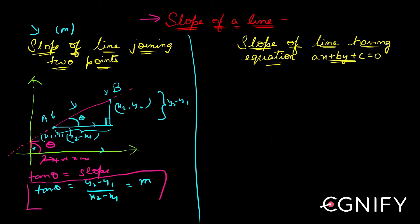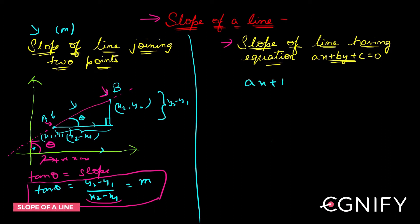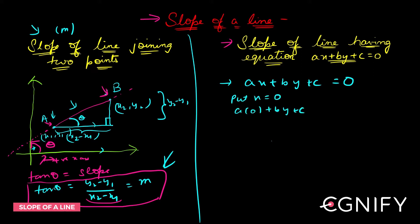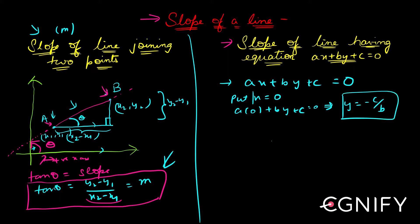If you know the coordinates of two points, you can always find the slope of the line joining them using this formula. Now let's find the slope of a line with equation ax + by + c = 0. I need to locate two points on this line. Put x = 0: you get by + c = 0, so y = −c/b. Therefore (0, −c/b) is a point on this line.